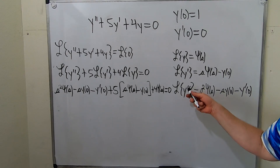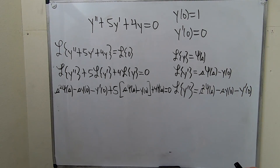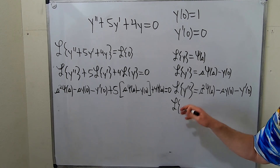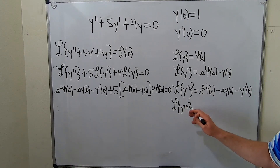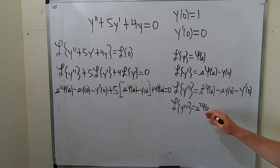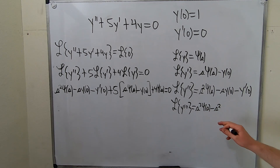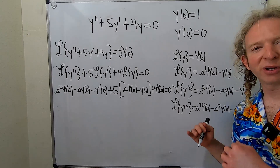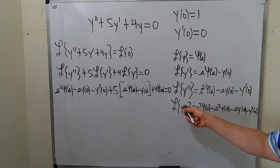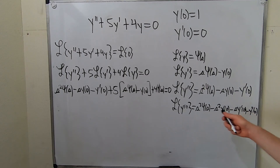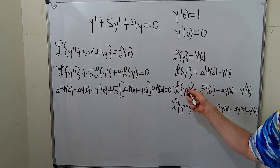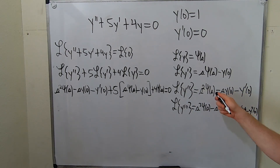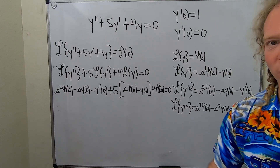Now we invoke our initial conditions. We impose them on the DE. So y(0) equals 1, so that gives us minus s. And y prime(0) is 0, so that term vanishes — minus 0. Then plus 5s·Y(s), and y(0) is 1 so minus 5, plus 4·Y(s), equal to 0. Be really careful in these problems — always take your time. One little mistake here and the whole thing is off.